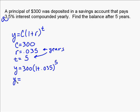So you put in 300 for c. You put 0.035 in for r and 5 in for t. And then you just simplify the expression.